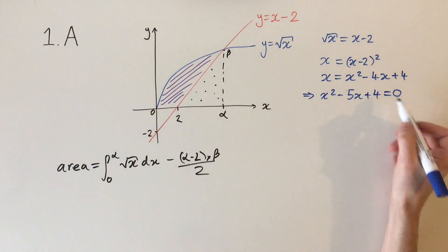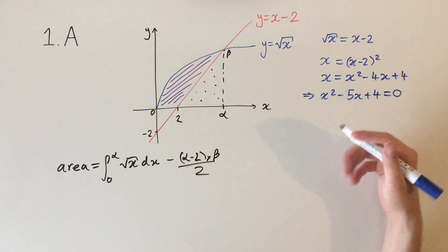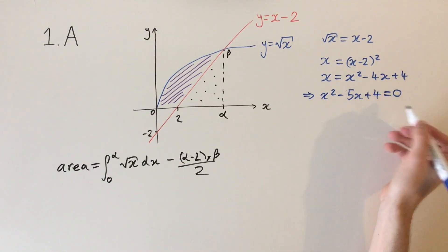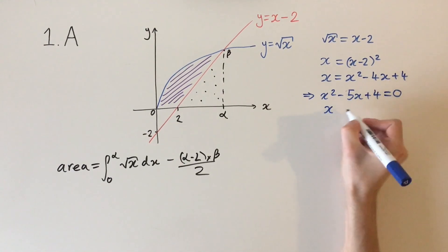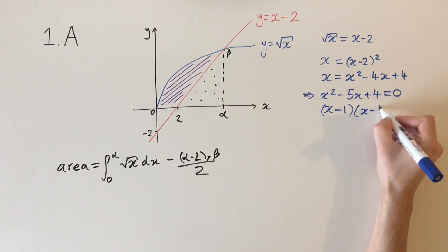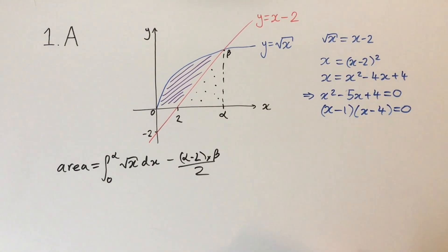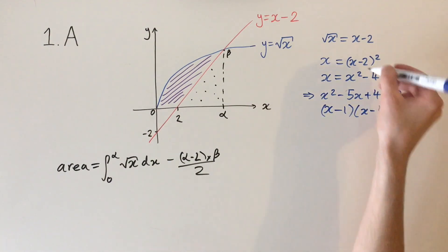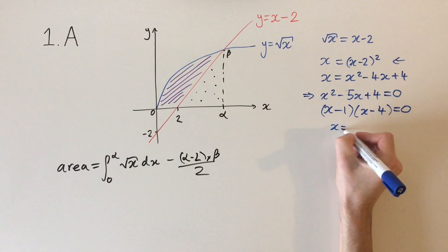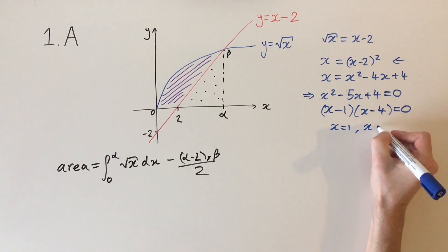We can use the tools you know—factorize, complete the square, or use the formula. Here this does factorize, so if you spot that it's going to be quicker. This factorizes as (x minus 1)(x minus 4) equals 0. So this tells us that this equation is true when x equals 1 and x equals 4.